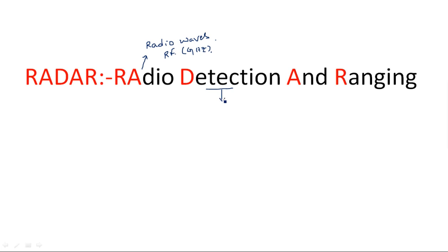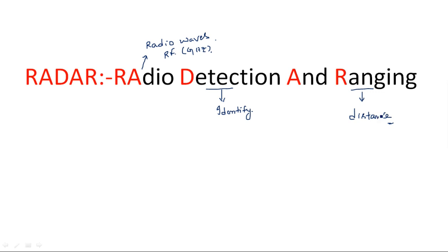Detection is the main purpose of the radar system — to identify whether an object is present in the vicinity of the radar or not. Along with identification, it also finds the distance between the object and the radar system. Range is nothing but distance. By this acronym we understand that radar uses radio frequencies to identify the presence of an object and calculate the distance to it.